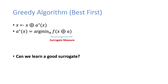This leads us to the greedy algorithm, or best-first search. The algorithm is very simple: if we have a surrogate measure F, we greedily grow a partial solution, choosing at each step the action with the best improvement in our surrogate measure. The question is: can we learn a good surrogate such that the greedy algorithm performs very well? That's the first place we'll look at the intersection between learning and discrete algorithms.